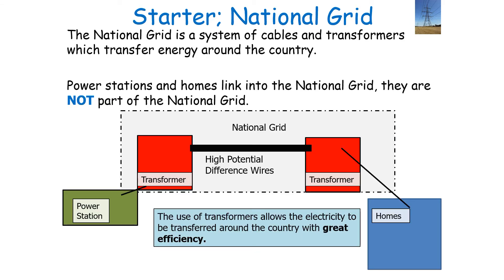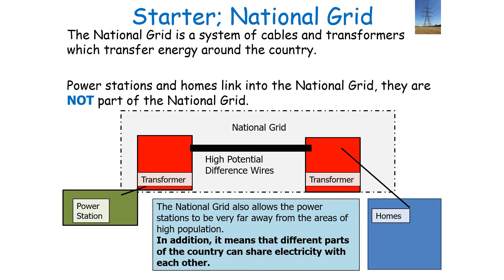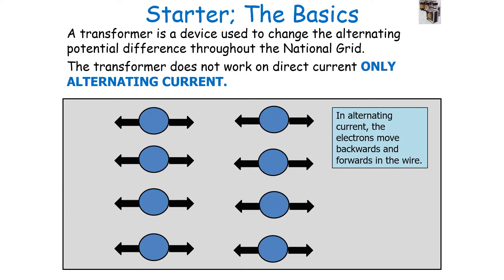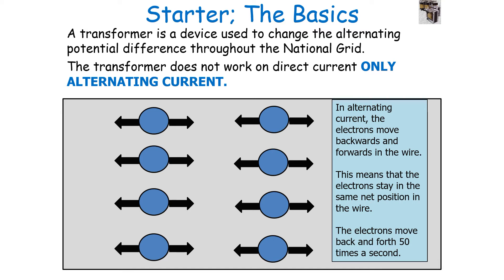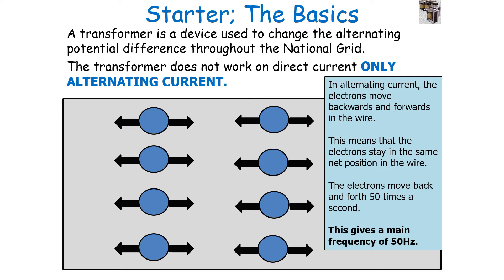The national grid is a system of cables and transformers which transfers energy around the country. It includes the step-up transformer, the transmission cable, and the step-down transformer, allowing electricity to be transferred around the country with great efficiency, and enabling different parts of the country to share electricity with each other. A transformer is a device that changes potential difference through the national grid, but it will only work on alternating current, not direct current. In alternating current, the electrons move backwards and forwards in the wire, oscillating 50 times every second in the UK, giving a mains frequency of 50 hertz.